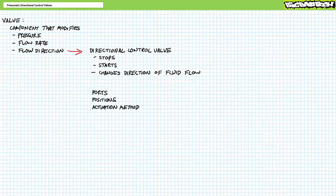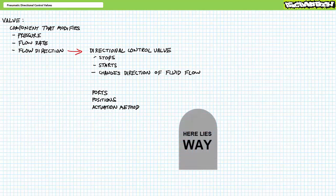Three properties define directional control valves: ports, positions, and actuation method. A port is a defined connection point. A position is one defined function of a valve characterized by a particular flow path. The actuation method is how a valve is moved from one position to another. Astute observers will note that I have not made use of the nonsense term "way," principally because the term might mean ports in one industry or be synonymous with the term position in another. It is for this reason I have declared the term "way" officially dead.